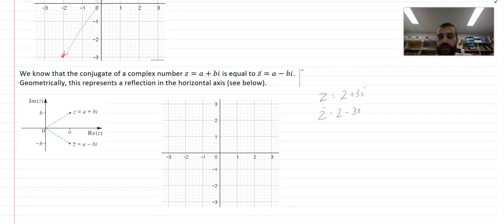So, z equals 2 plus 3i. The conjugate of that is 2 minus 3i. So, we can draw that up.